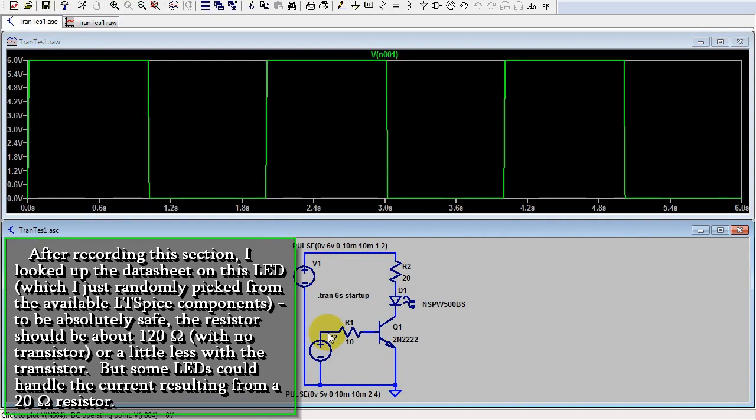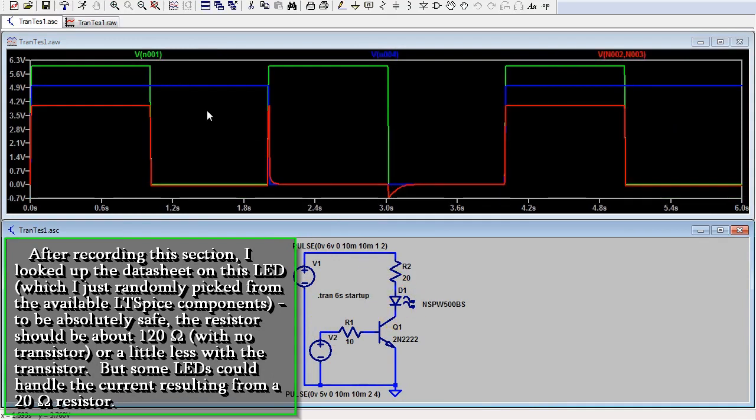The transistor in this arrangement connects and disconnects the LED to ground. Except for very brief spikes, the LED only is on when the control voltage at the base is high. I'm pulsing the supply voltage to prove it's actually doing something.